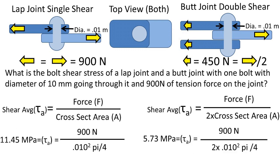After plugging in the tensile force of 900 newtons and 2 times the cross-sectional area, we get 5.73 megapascals for the shear stress on the bolt. Notice that this is half the value of the lap joint example.